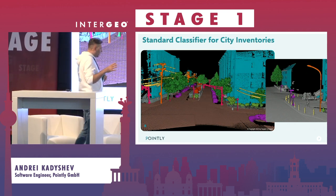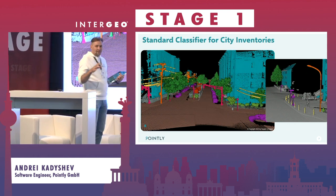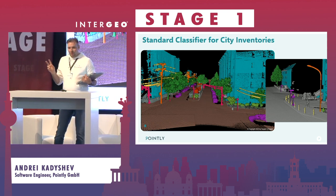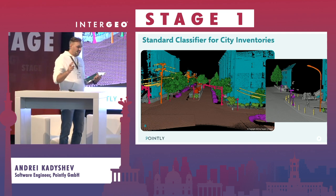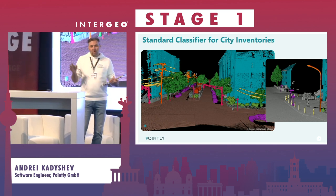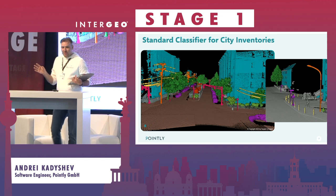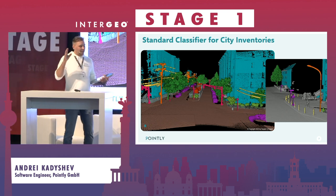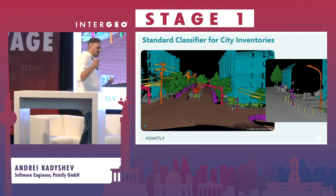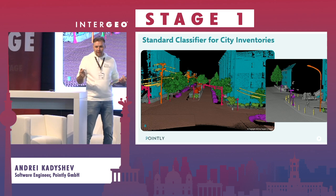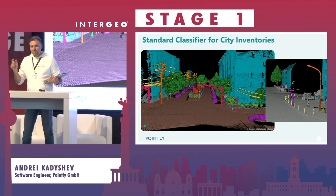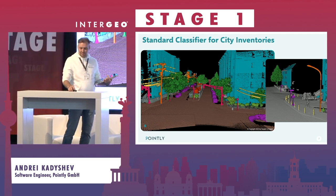Apart from the four classifiers already available on our platform, our team is currently working on two more new solutions that are also very general but will be very useful. These solutions will be delivered in the first quarter of 2024. One is for extraction of objects of road and street infrastructure like road signs, fences, and traffic lights, and another solution for extraction of electric lines.